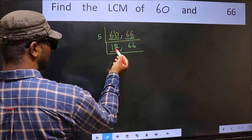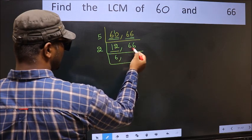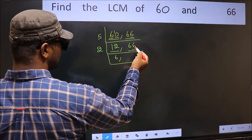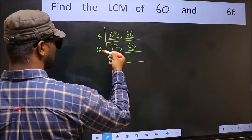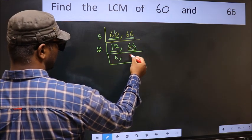Now here we have 12. The other number 66, last digit 6, even, so this is divisible by 2. First number 6, when do we get 6 in 2 table? 2 times 3 is 6.